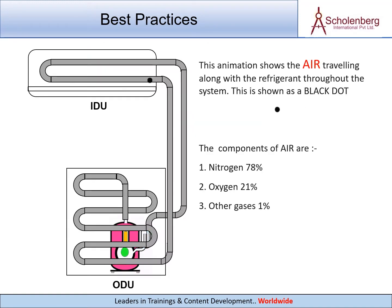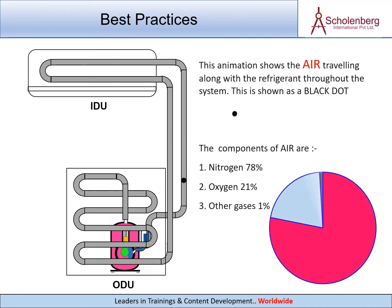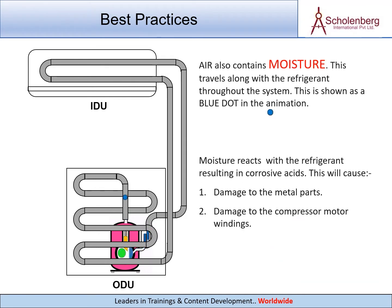This animation shows the air traveling along with the refrigerant throughout the system. This is shown as a black dot. The components of air are: 1) nitrogen 78%, 2) oxygen 21%, 3) other gases 1%. Air also contains moisture, which travels along with the refrigerant throughout the system. This is shown as a blue dot in the animation.